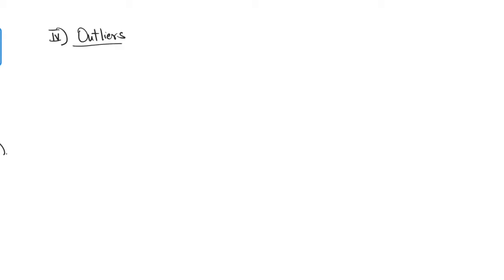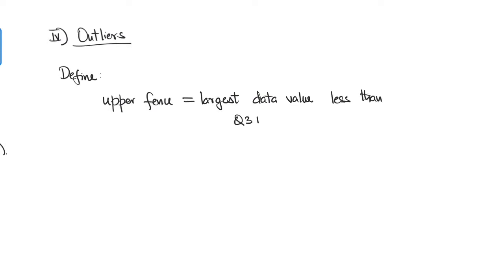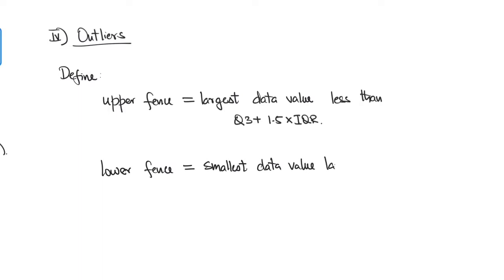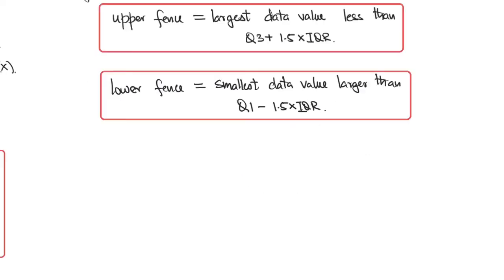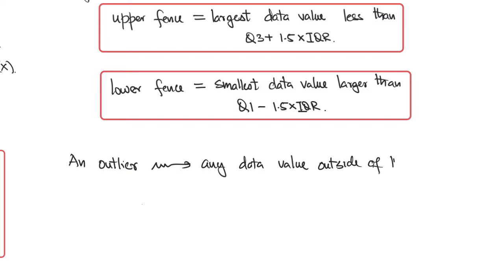We will use this information to now define outliers. The upper fence corresponds to the largest data value less than the third quartile plus 1.5 times the interquartile range. The lower fence is going to be the smallest data value greater than the first quartile minus 1.5 times the interquartile range. An outlier is going to be a data point that lies outside of these fences.